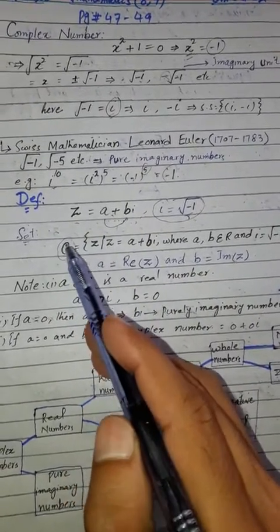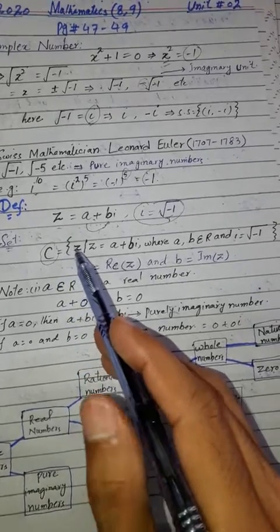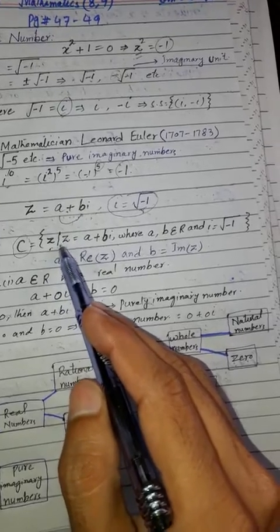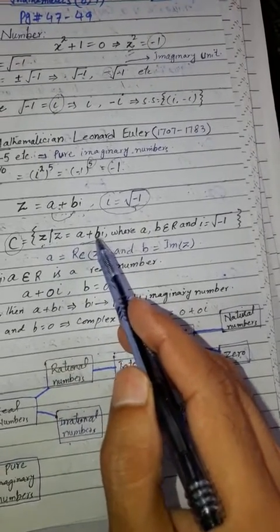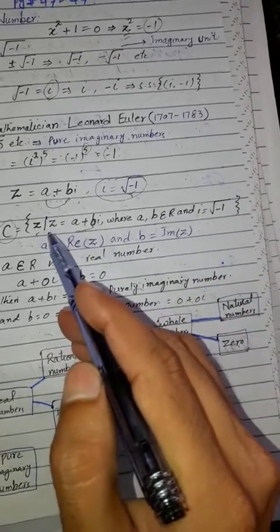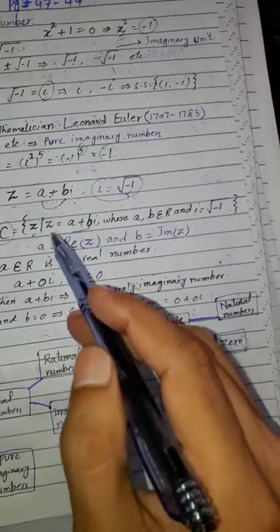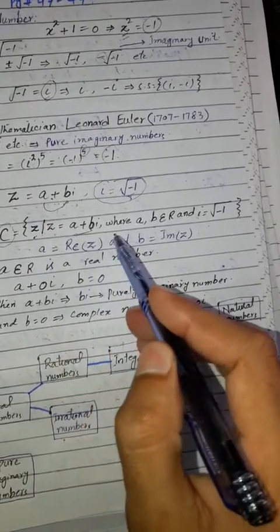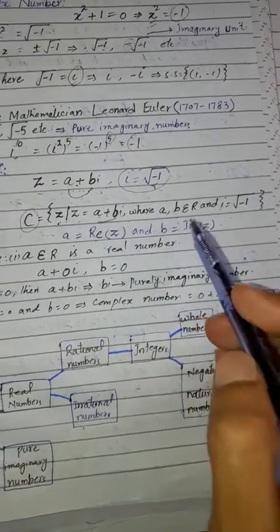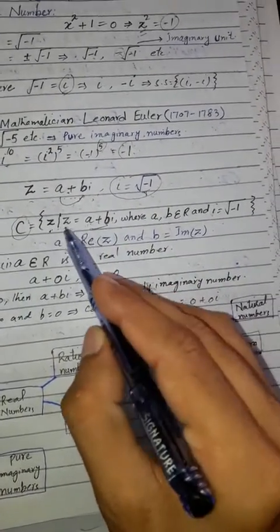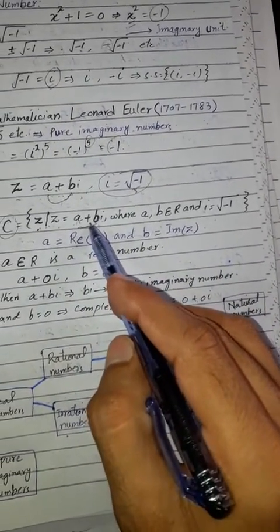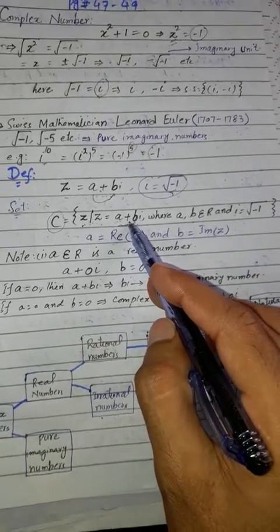The complex number set is always represented by C. We write Z equal to A plus B iota, where A and B are real numbers. Here A is called the real part, written as Re(Z) equals A, and B is called the imaginary part, written as Im(Z) equals B — that is, the coefficient of iota.